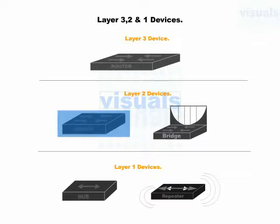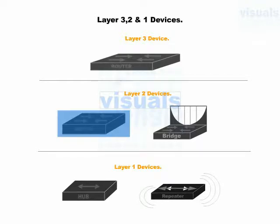Let's discuss collision domain with an example. Assume there are five persons sitting with a cake in front of them. You cut the pieces of cake and provide each piece to each person — this is how a switch works. Each interface of a switch provides a separate collision domain. We connect end users to switch ports. A collision domain is a place where a computer receives and sends data.